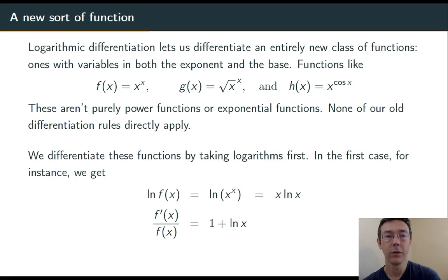On the left, the derivative is going to be 1 over f of x times f prime of x by the chain rule. On the right I have a product rule, so it's going to be x times 1 over x plus 1 times natural log of x, so 1 plus ln of x.